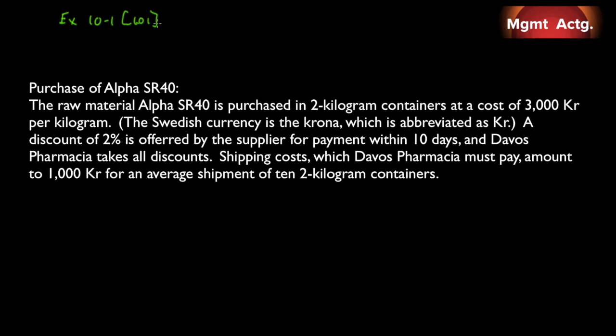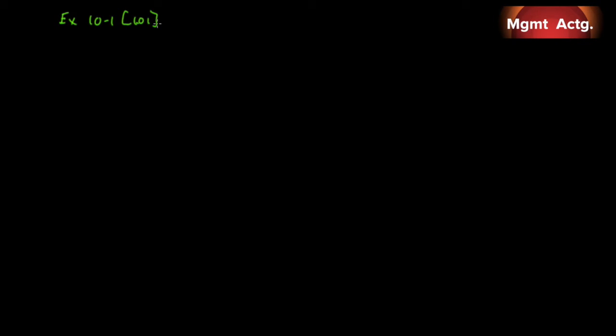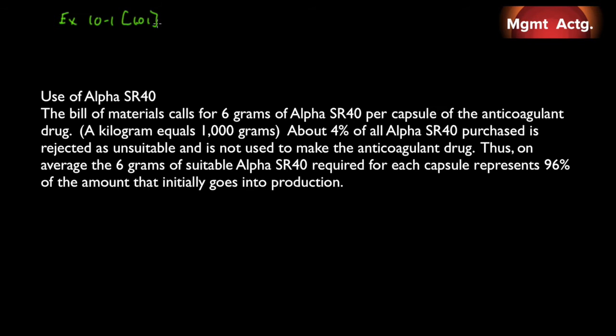Let's see what we have. Purchase of Alpha SR40. The raw material Alpha SR40 is purchased in two kilogram containers at a cost of 3,000 krona per kilogram. A discount of 2% is offered by the supplier for payment within 10 days and Davos Pharmacia takes all discounts. Shipping costs, which Davos must pay, amount to 1,000 krona for an average shipment of 10 two kilogram containers. Then we have a section on the use of Alpha SR40. The bill of materials calls for 6 grams of Alpha SR40 per capsule of the anticoagulant drug. We have here in brackets a kilogram equals 1,000 grams. That's for our friends in the US. Up here in the present, just keep that in mind that a kilogram equals 1,000 grams.